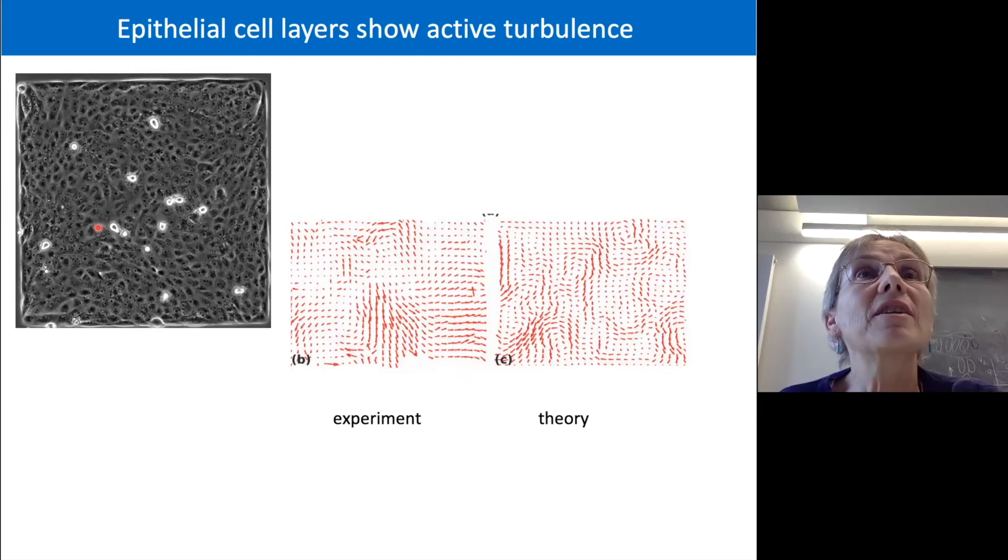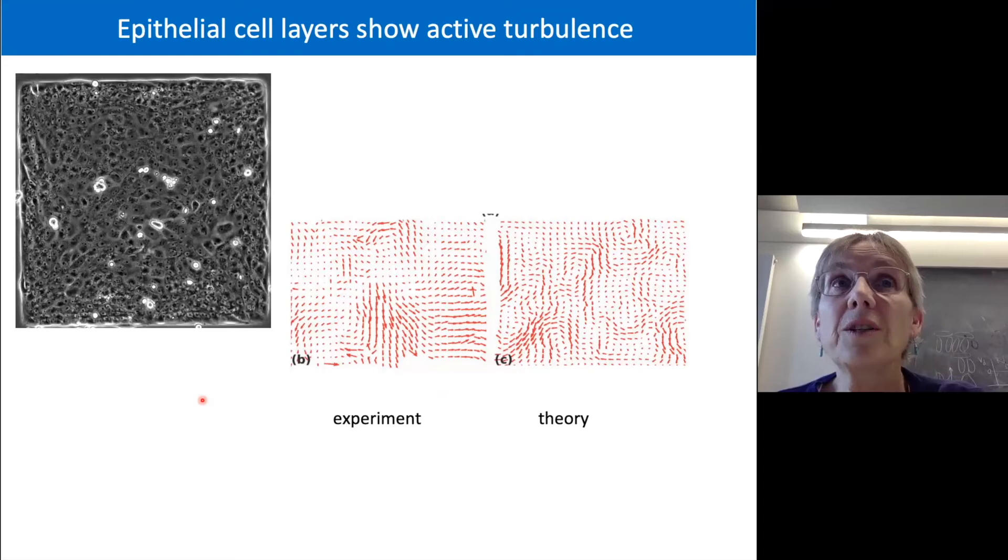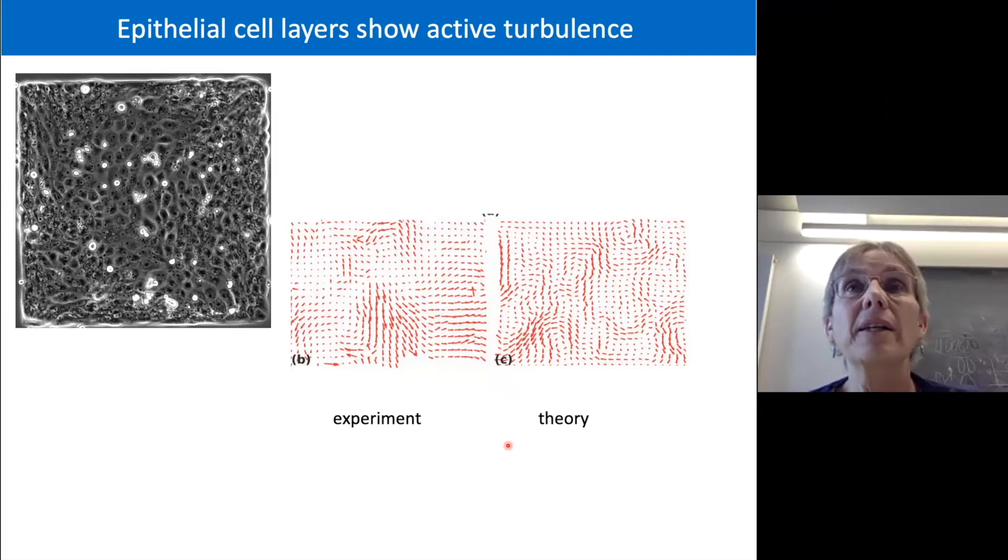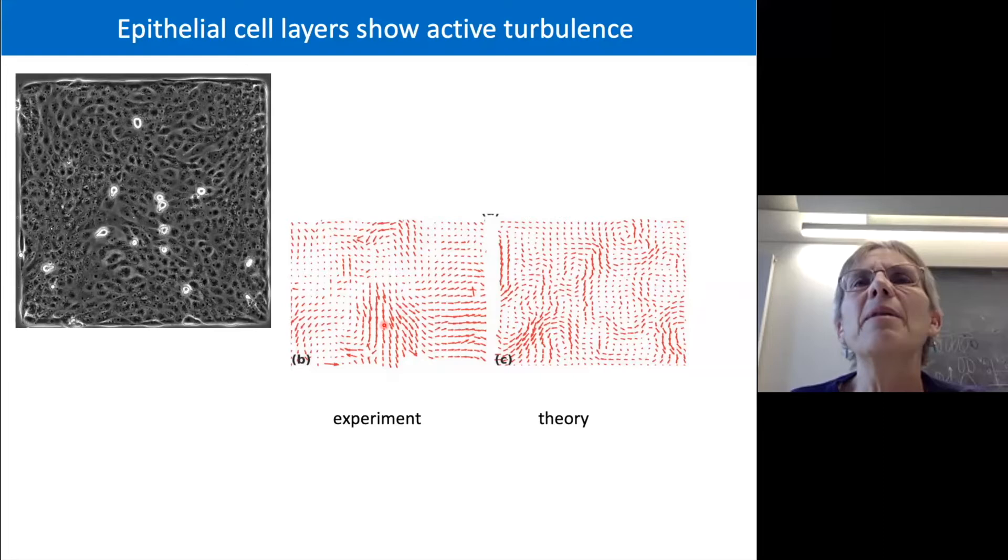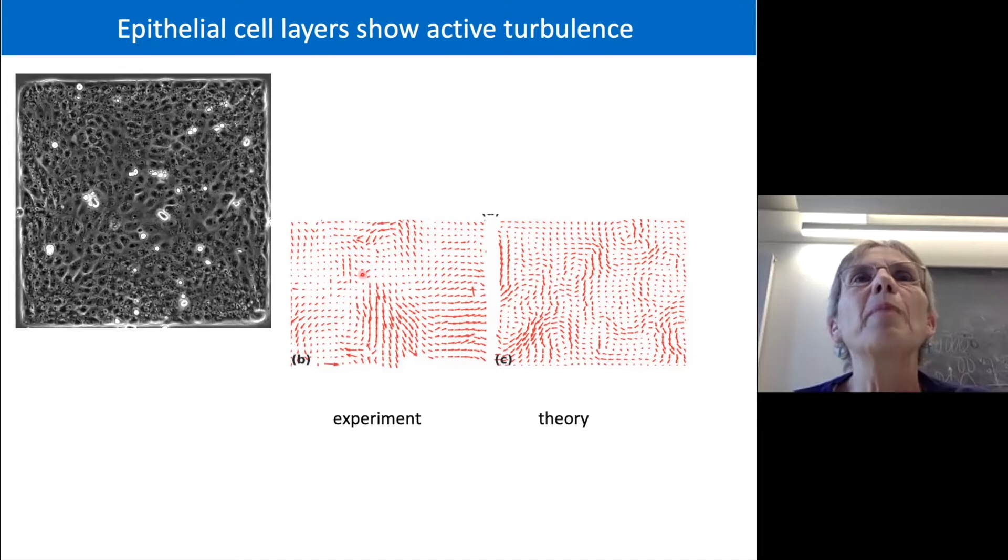And if we look at cells, you see very much the same thing. You see swirly sorts of behavior. And if you measure the velocity field of those cells, it looks very similar in the experiments to the theories of active nematics. In particular, you see these sudden jets of velocity. The cells start suddenly moving collectively in a given direction. And you also see this sort of swirliness, this active nematic-type vorticity.